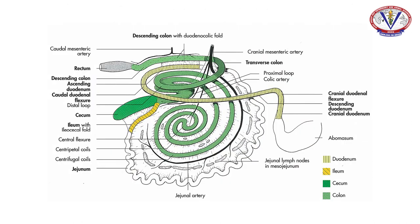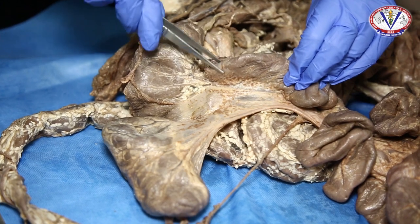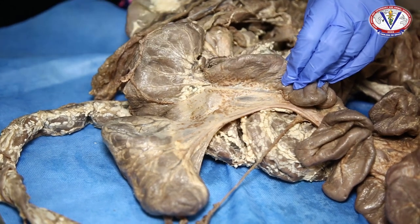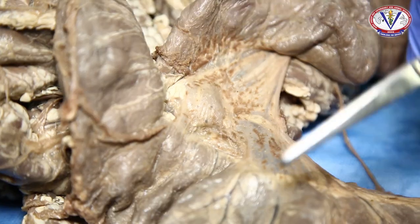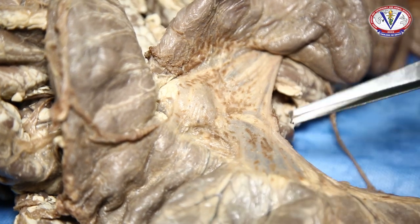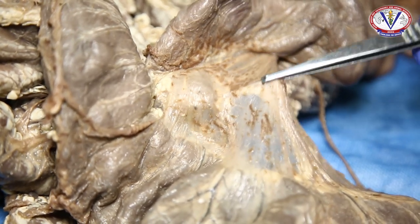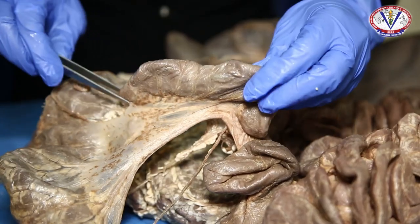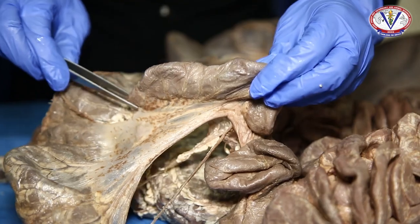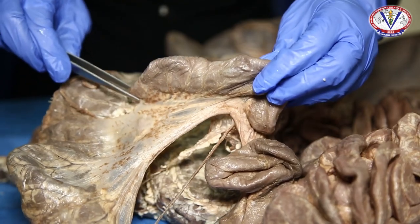The ileum is the straight terminal part of the small intestine, passing cranially ventral to the cecum, to which it is connected by the ileocecal fold. It ends at the ileocecocolic junction.